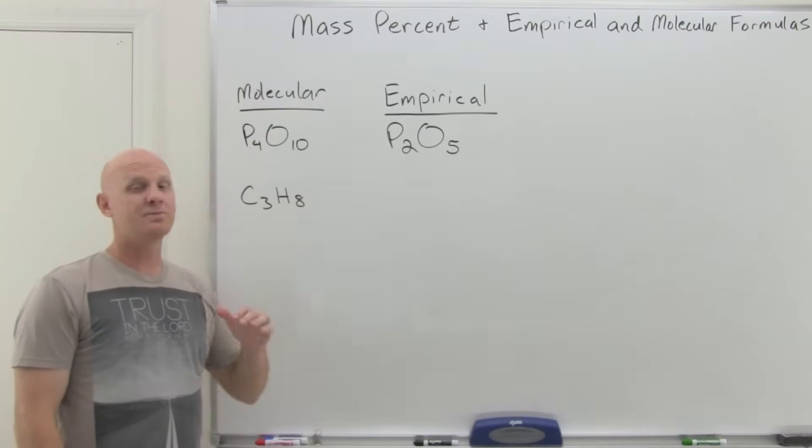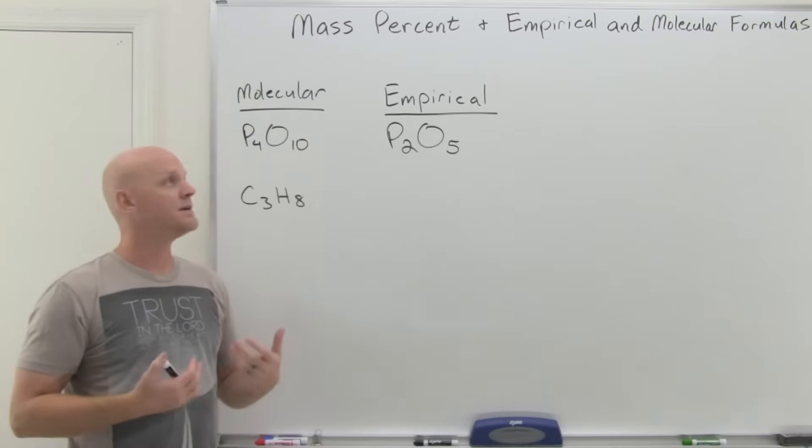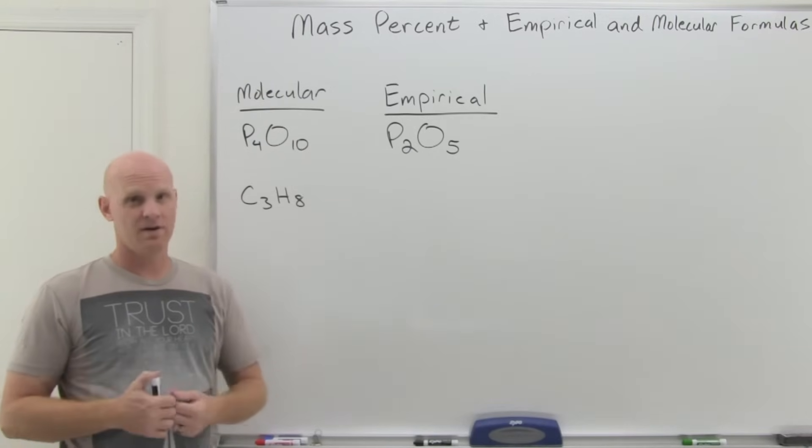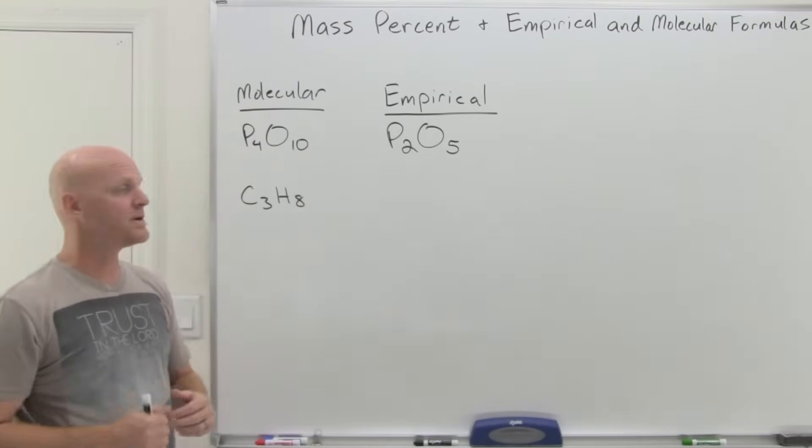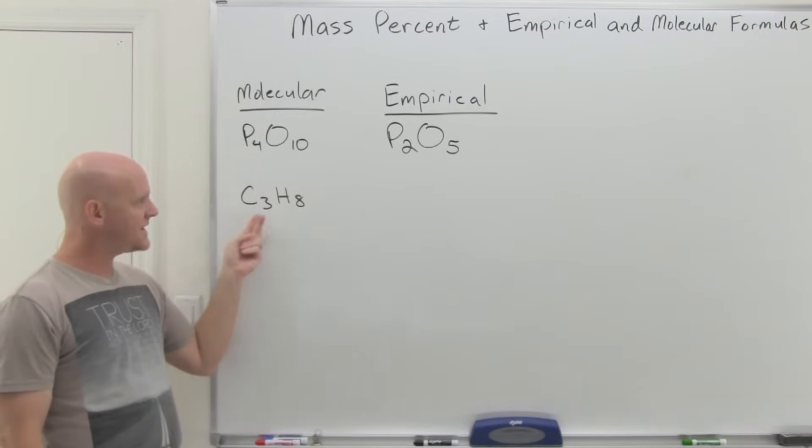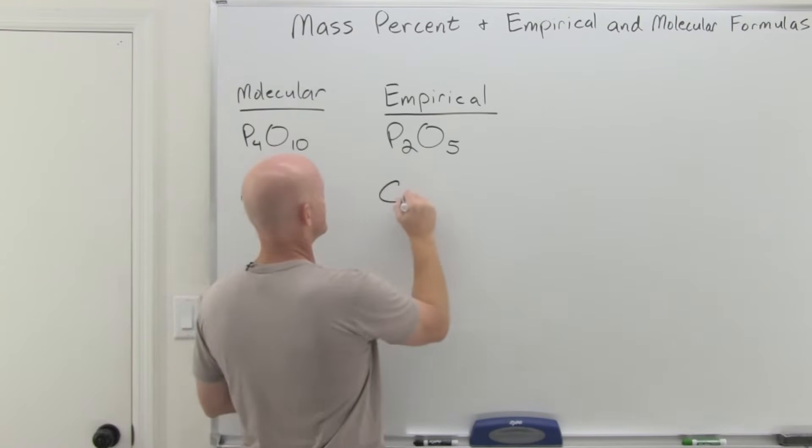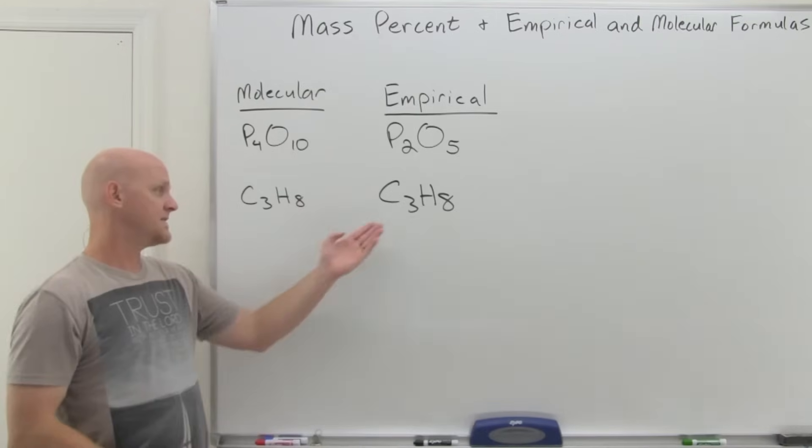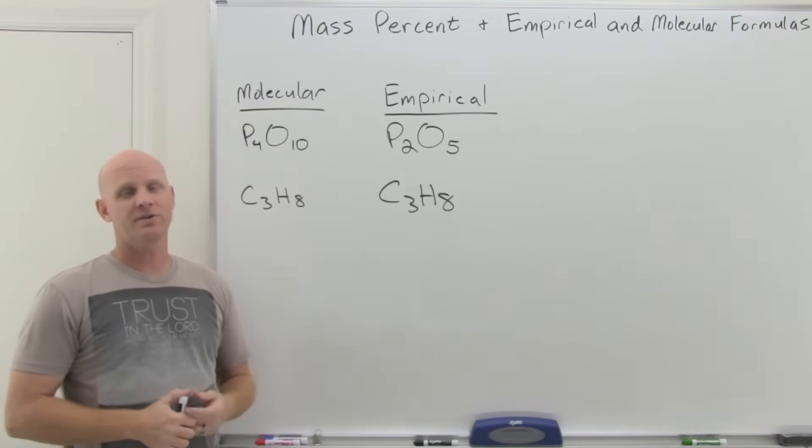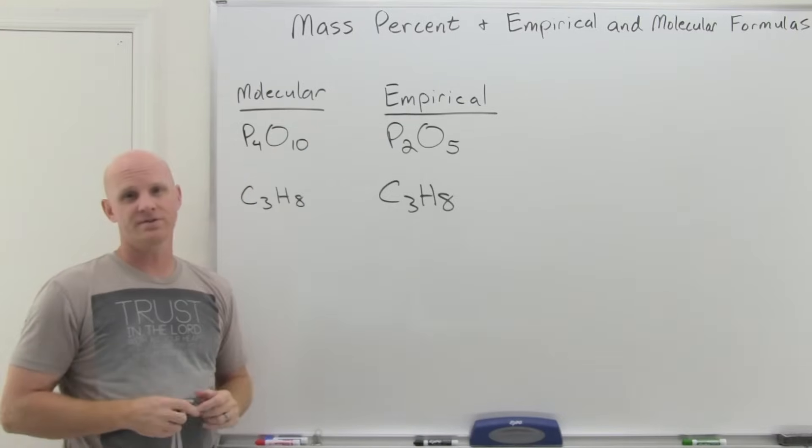Now for a lot of compounds, it turns out that your molecular and your empirical will end up being one and the same. If your molecular formula happens to have the lowest integer ratio, that's going to be your empirical as well. That's the case here with propane at C3H8—that 3 to 8 ratio can't be reduced any further, so the empirical formula would also be C3H8. This is not uncommon.